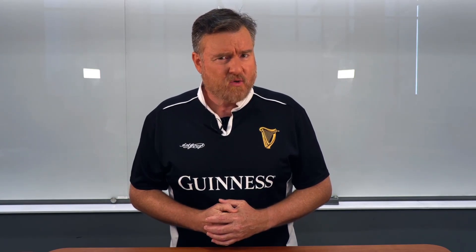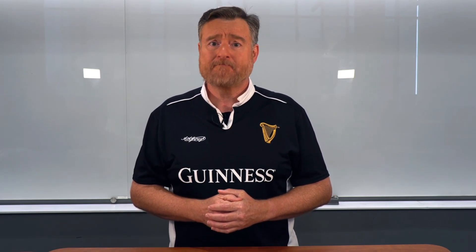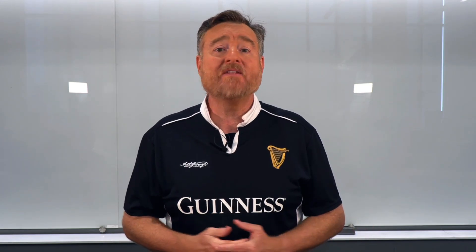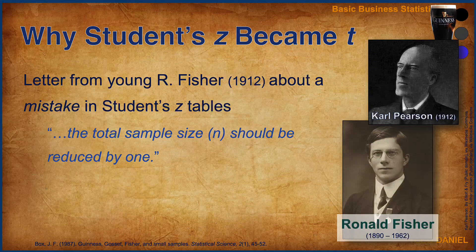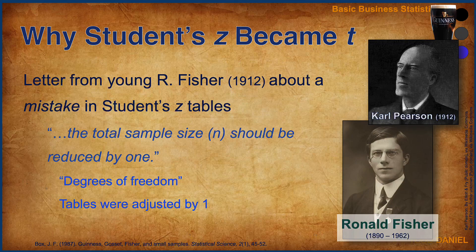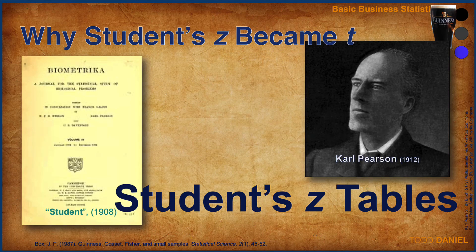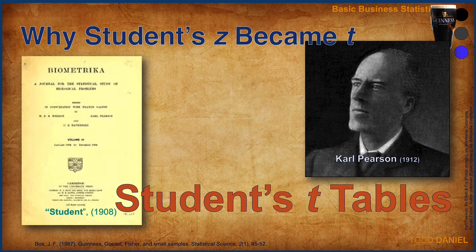You might think it's rather cheeky of a young man in his twenties to write such a letter to the editor of the most prestigious statistical journal of the time. But that was Ronald Fisher, creator of the F-Test or the ANOVA. He and Pearson butted heads throughout their entire lives and careers. However, their conflict redounds to our benefit in the overall improvement to statistical science. Fisher noted that in Student's Z-Tables, the total sample size n should be reduced by one — the table should use degrees of freedom (n minus one), not sample size. And Pearson realized that young Master Fisher was right again. Pearson republished Student's Tables, this time calling them Student's T-Tables. And that is the name by which we know them today.